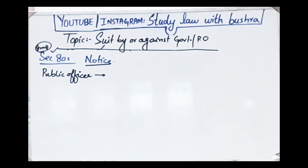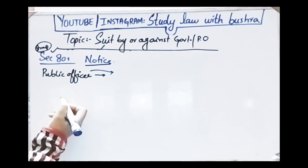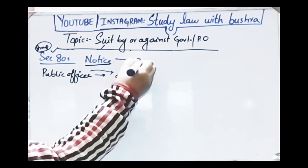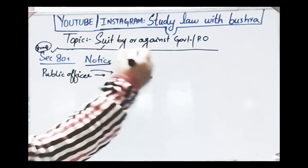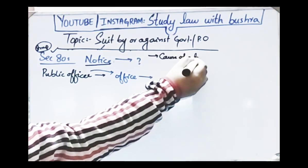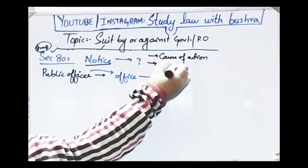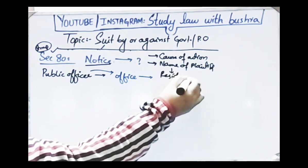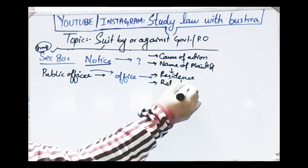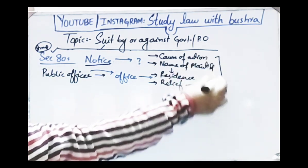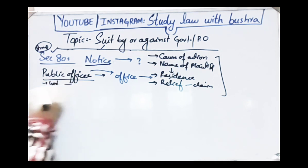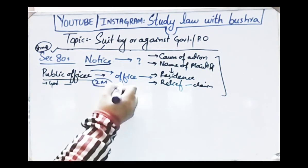Further, if a suit is to be filed against a public officer, you will send the notice to his office. Now, what must be mentioned inside this notice? Number one: the cause of action — why you want to file the suit, what your matter is that you want resolved. The name of the plaintiff sending the notice, his residence — where he lives — and the relief you are claiming or demanding from the government or public officer must also be mentioned.